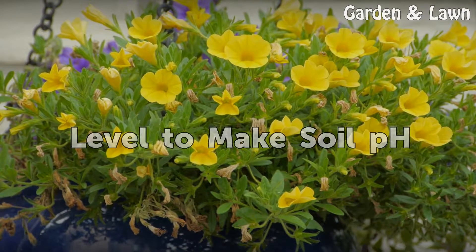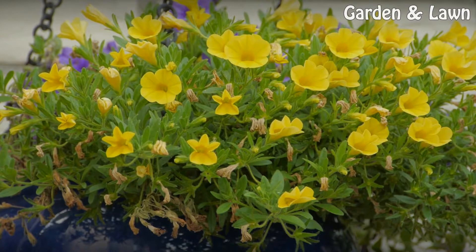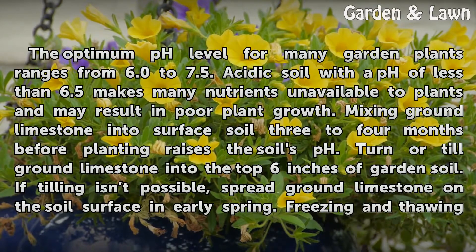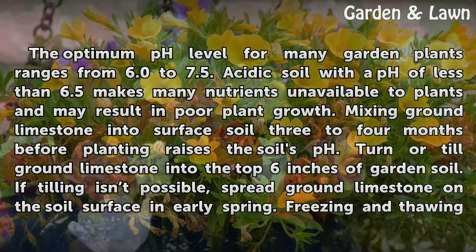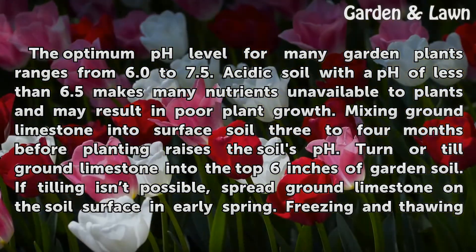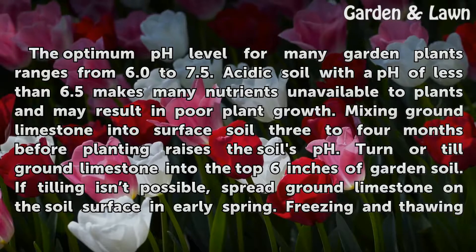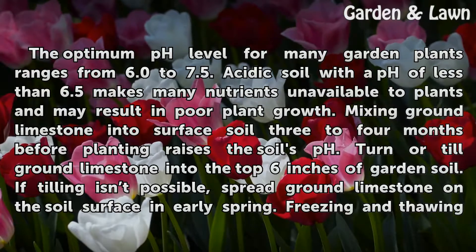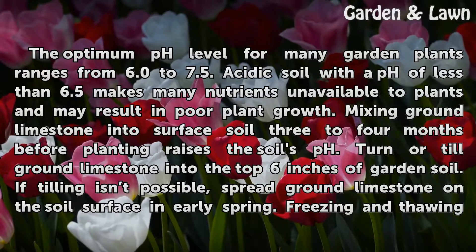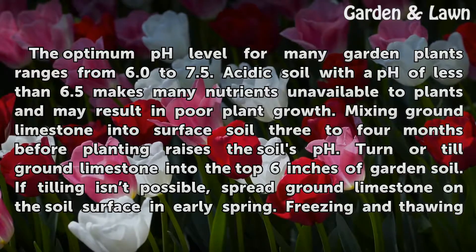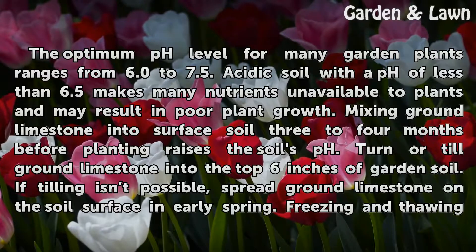The optimum pH level for many garden plants ranges from 6.0 to 7.5. Acidic soil with a pH of less than 6.5 makes many nutrients unavailable to plants and may result in poor plant growth. Mixing ground limestone into surface soil 3 to 4 months before planting raises the soil's pH. Turn or till ground limestone into the top 6 inches of garden soil.